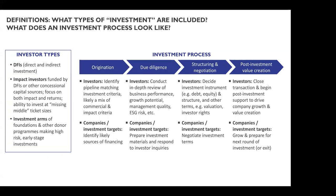In terms of investment types, we looked at DFIs and impact investors — who are often funded by DFIs or other concessional capital sources and tend to focus on both impact and investment returns. They should theoretically have the ability to invest at missing-middle ticket sizes. We also briefly looked at investment arms of foundations and other donor programs that make early-stage, high-risk investments. Many PSD programs can also engage commercial investors — venture capital or private equity — to provide growth or scaling capital. We didn't focus as much on commercial investors because the barriers to collaborating with them were even higher due to constraints around return expectations and ticket sizes.